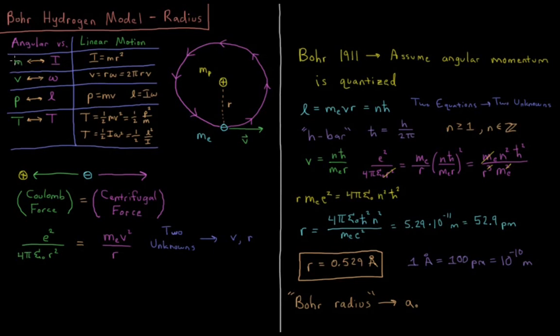Linear motion has mass, which is the resistance to acceleration. The resistance to rotation is the moment of inertia. Moment of inertia equals mass times radius squared, radius of whatever you're rotating around.